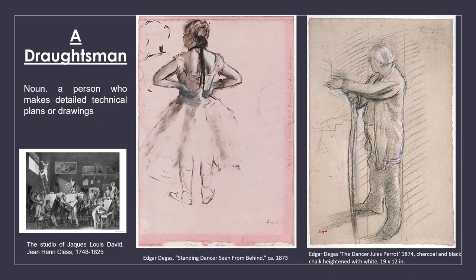Degas himself was fascinated by movement and studied the actions of the human body. We can see here the 'Standing Dancer Seen From Behind' and the 'Dancer Jules Perrot' — examples of how Degas would carefully study the human figure and put down marks in charcoal. These drawing skills, developed in college, really do separate him from other Impressionists who focused on plein air painting.